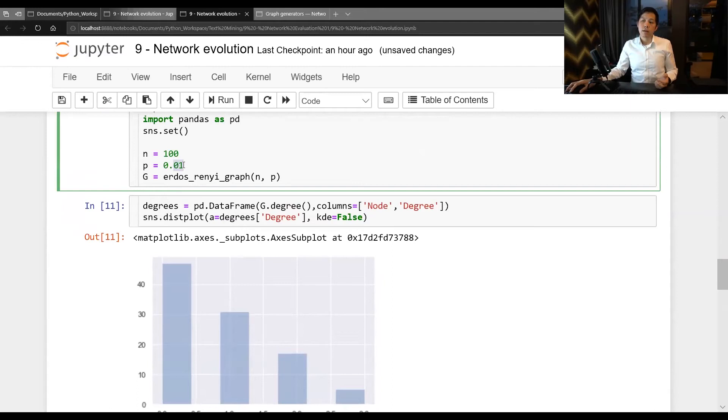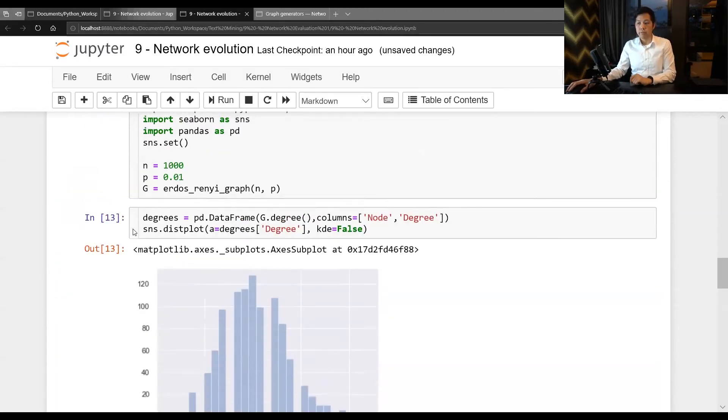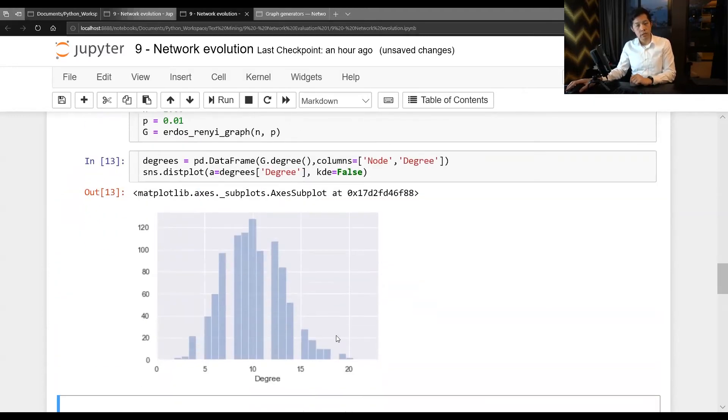But if I put this to 0.5, it looks like almost normal distribution. What types of distribution that behave like this? Does anyone know? Does anyone raise your hand here?